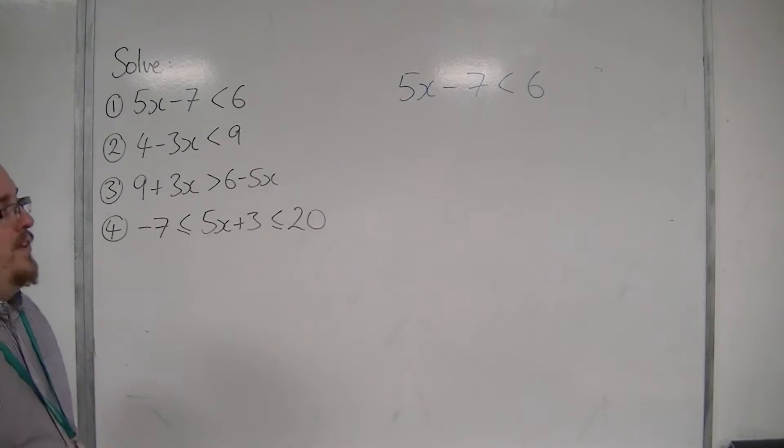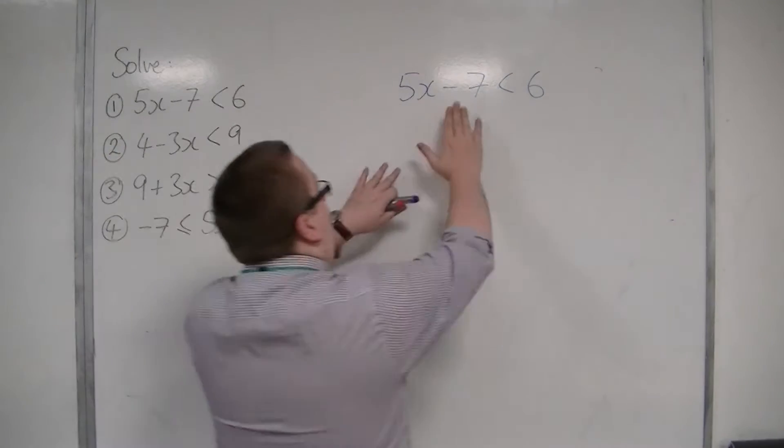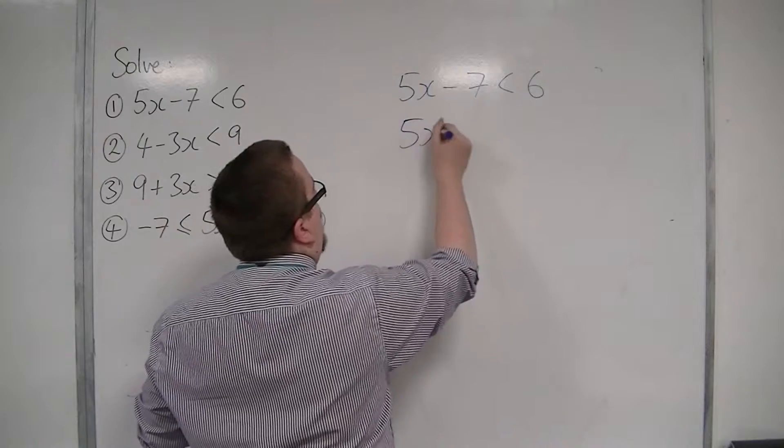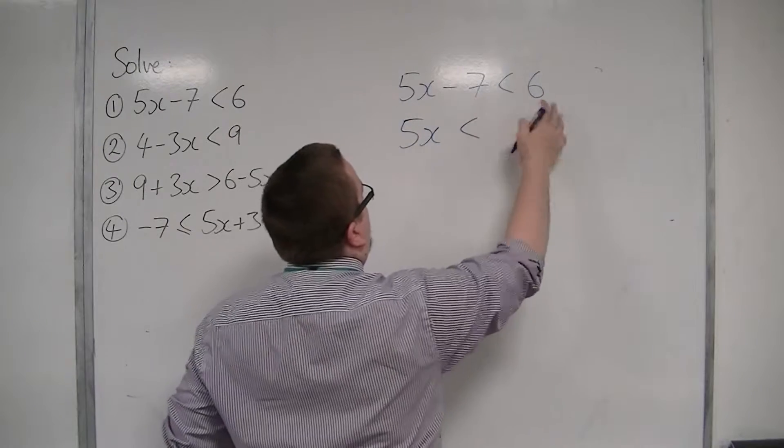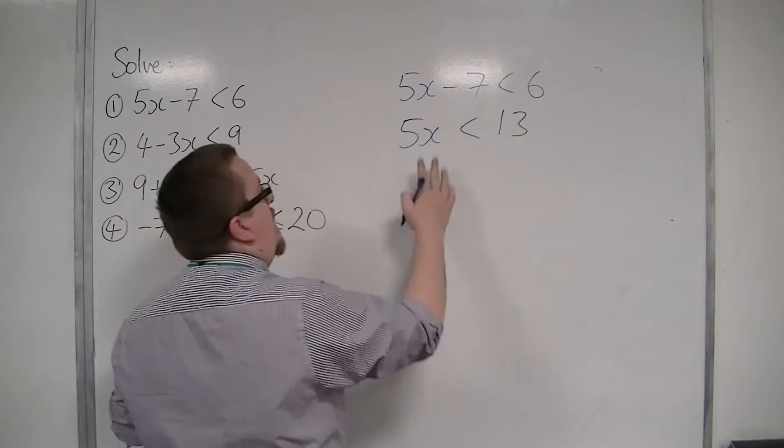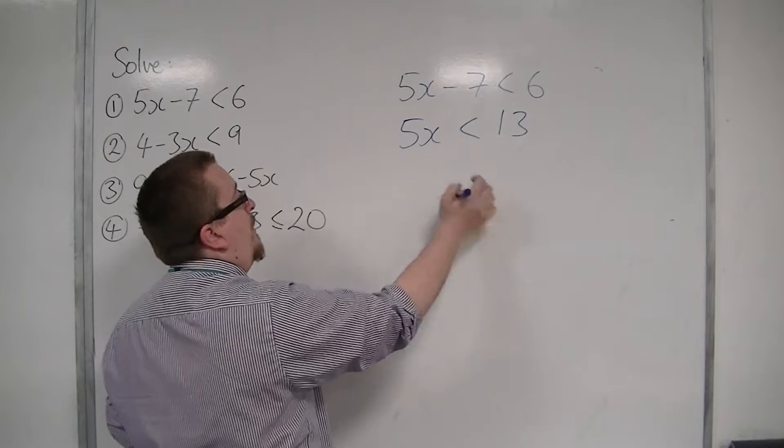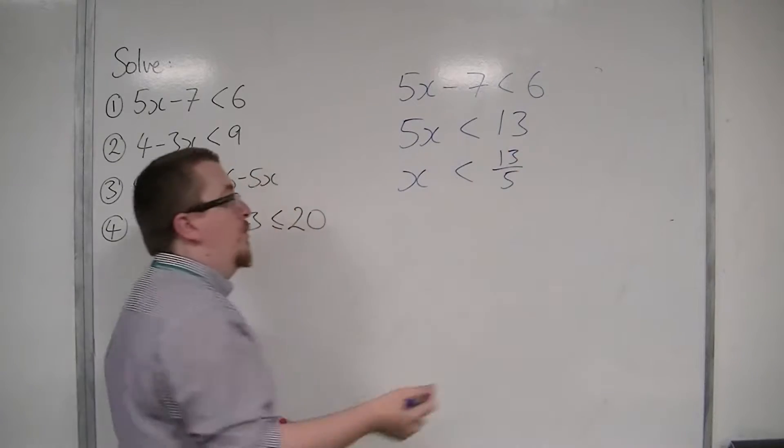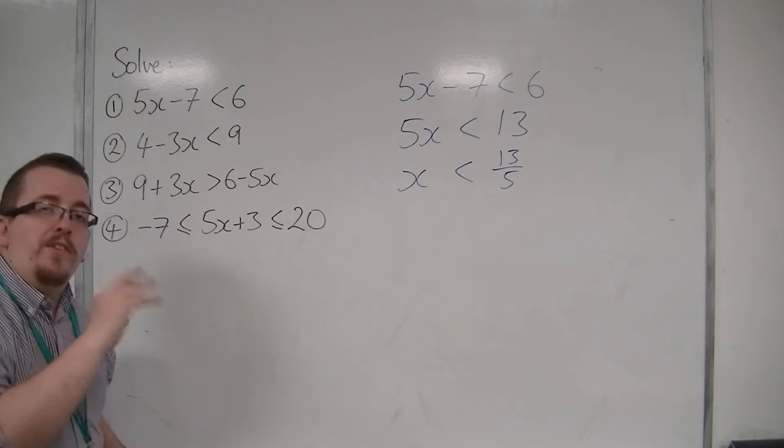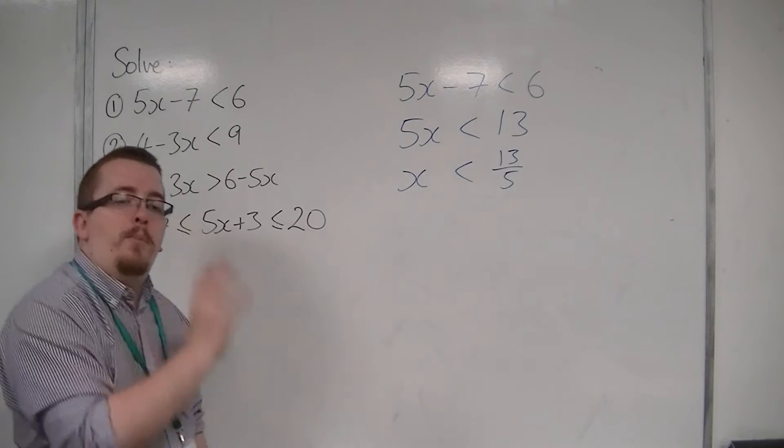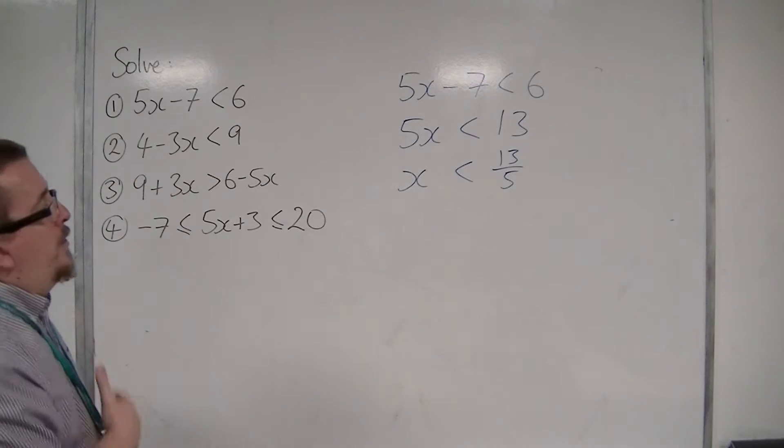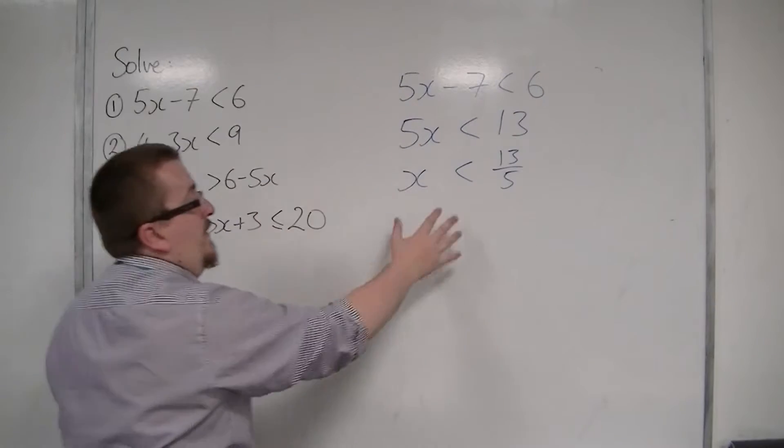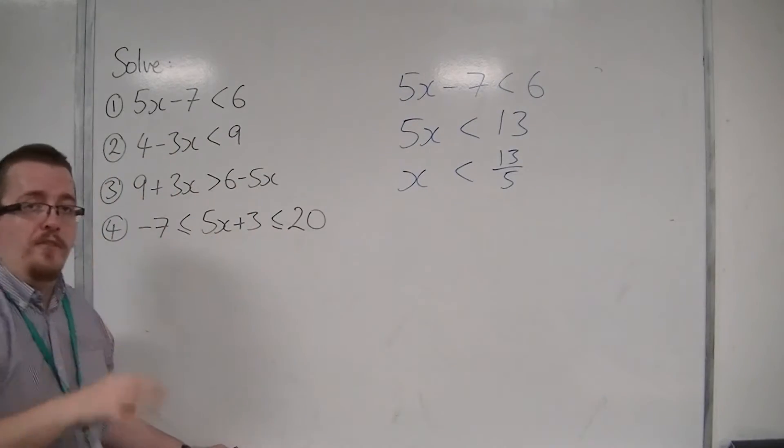So 5x minus 7 is less than 6. I can add 7 to both sides just as I would a normal equation. So 7 plus 6 is 13. And then I can divide both sides by 5. That wouldn't flip the inequality symbol round because I'm dividing through by a positive number. So the solution to that inequality is x is less than 13 fifths.